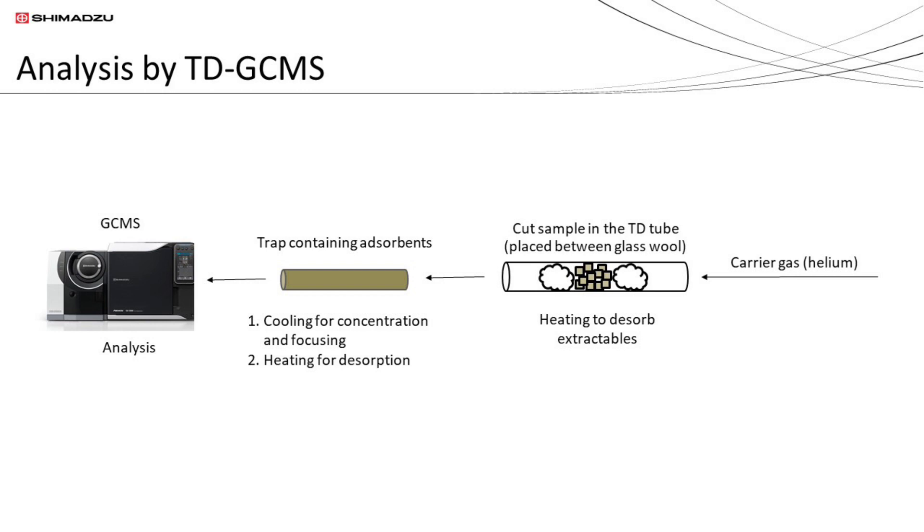The TD system proceeded to heat the sample in order to extract the volatile and semi-volatile extractables from the cut packaging material. Carrier gas transferred the extractables vapor to a cool trap inside the TD system for further concentration and focusing.